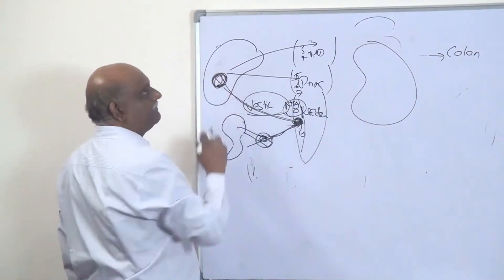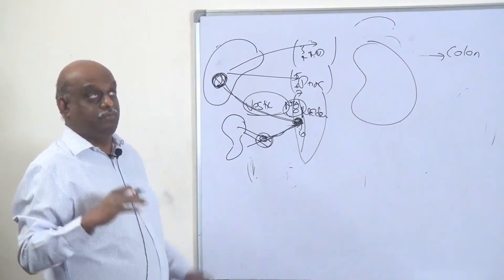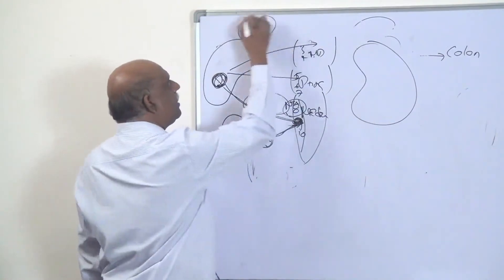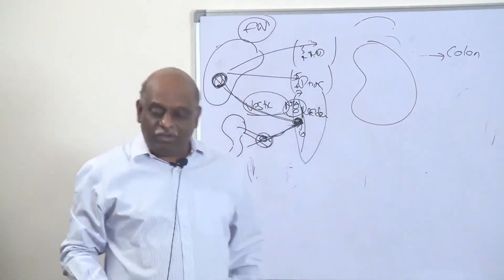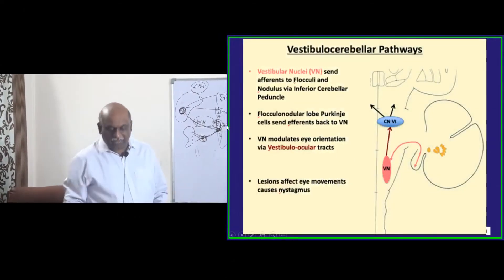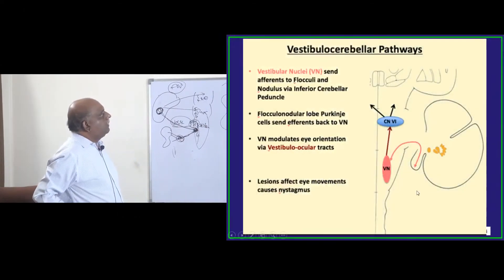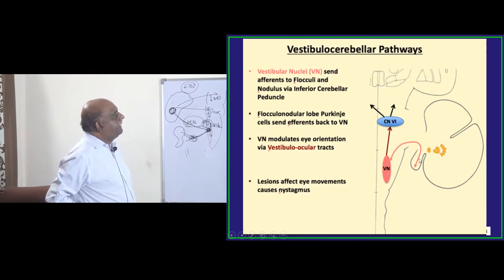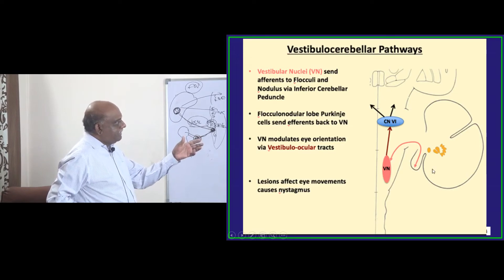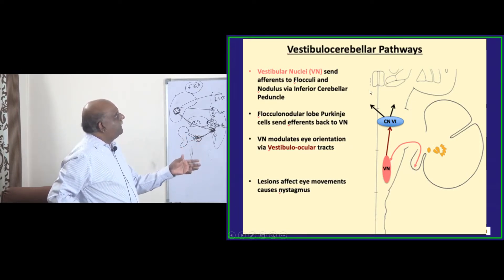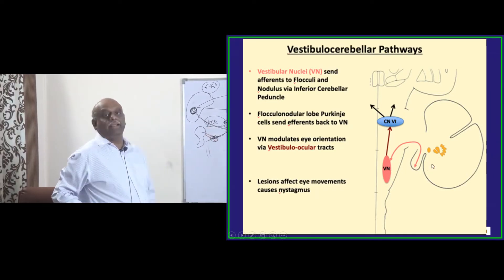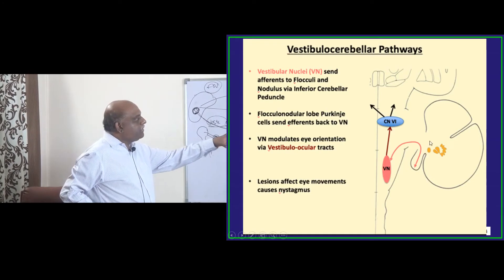In the cerebellum, which part receives this information? The cerebellum has different components. The flocculo-nodular lobe of the cerebellum is the one which receives that information. The vestibular nuclei send afferents to the flocculo-nodular lobe via the inferior cerebellar peduncle.